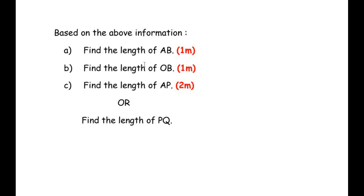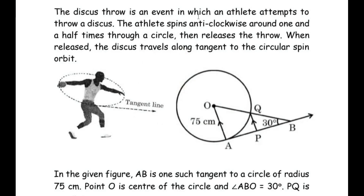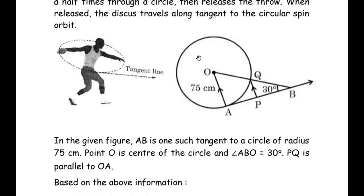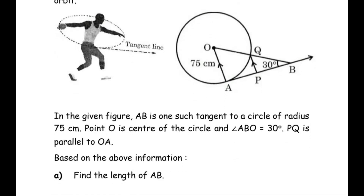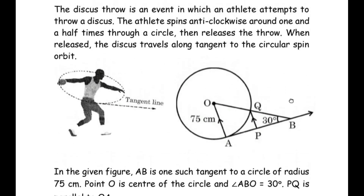Let us start with the first sub-question. The discus throw is an event in which an athlete attempts to throw a discus. The athlete spins anti-clockwise around one and a half times through a circle, then releases the throw. When released, the discus travels along a tangent to the circular spin orbit. In the figure, AB is one such tangent to the circle of radius 75 cm. Point O is the center of the circle and angle ABO is equal to 30 degrees. PQ is parallel to OA. Based on the above information, find the length of AB.